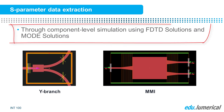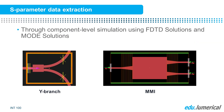The S-parameter data can be extracted by performing component level simulations using numerical FTT solutions or mode solutions. The component level simulations are beyond the scope of this course, but we will show an example of S-parameter data export from FTT solutions in the demonstration in the next unit to give an idea of how it can be done.